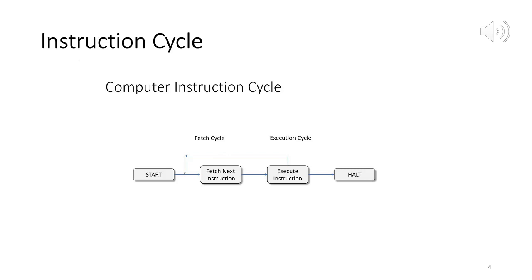The fetched instruction is loaded into the Instruction Register (IR). The program counter holds the address of the next instruction to be fetched, and the actual instruction is loaded into the instruction register. So the CPU looks at the IR and knows this is the instruction to execute — perhaps a load, store, or addition.